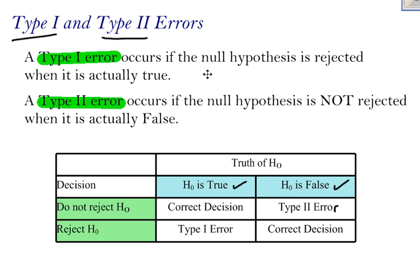So once again, you'll never know if you've made these errors. You just need to know what they are and what the definitions are, and if given a scenario, what would a type 1 or type 2 error look like?